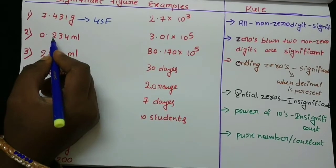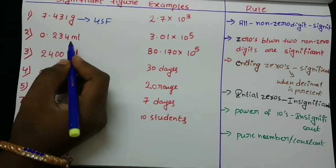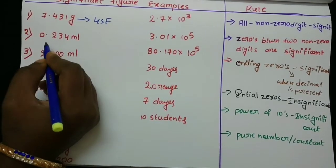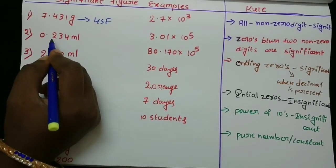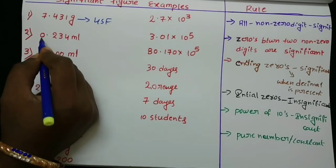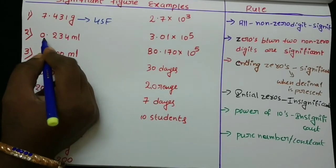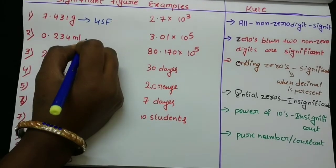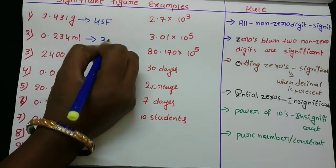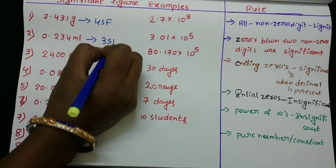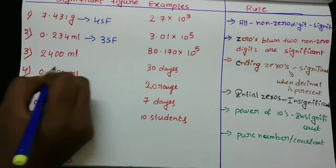0.234 ml — the number of significant figures is 3, because the initial zeros are insignificant. So there are three significant figures.